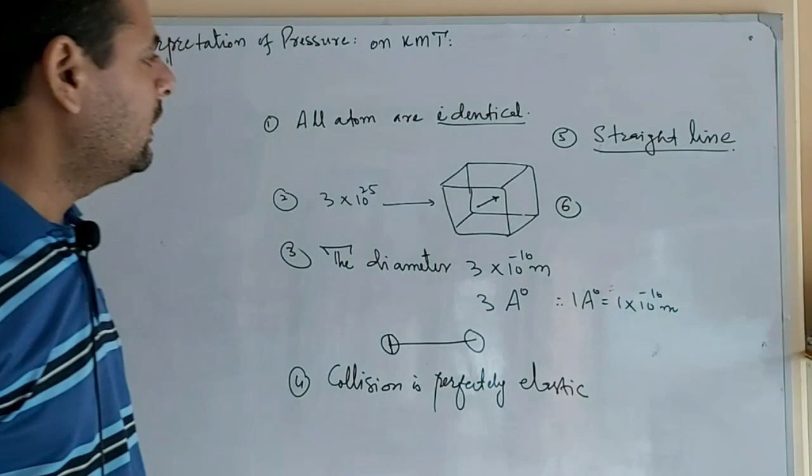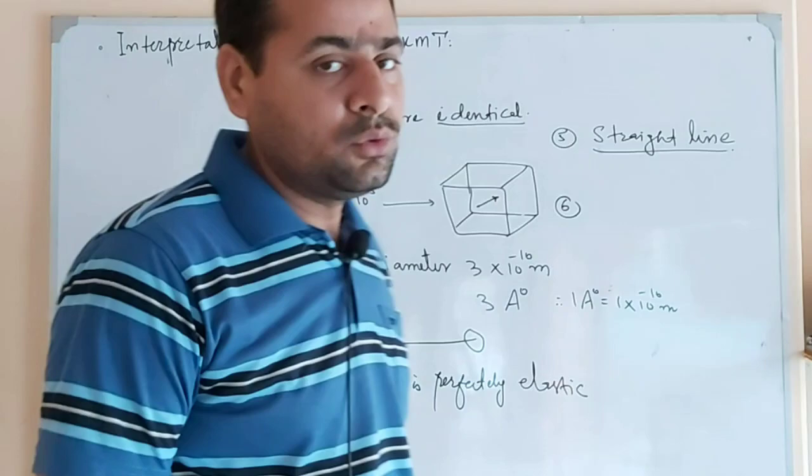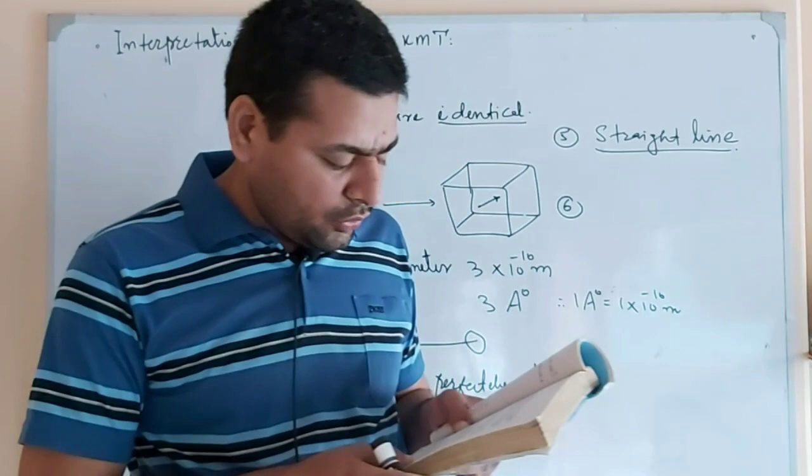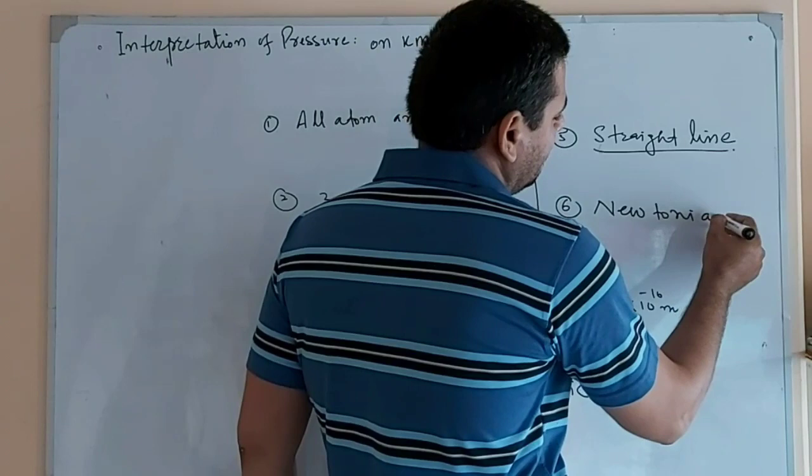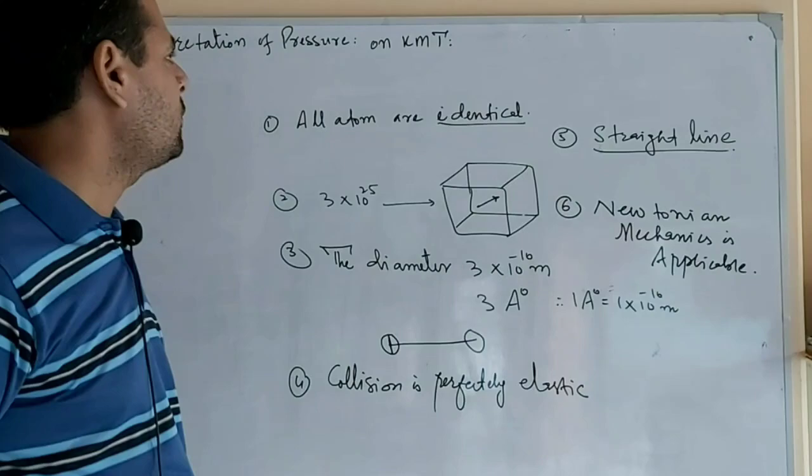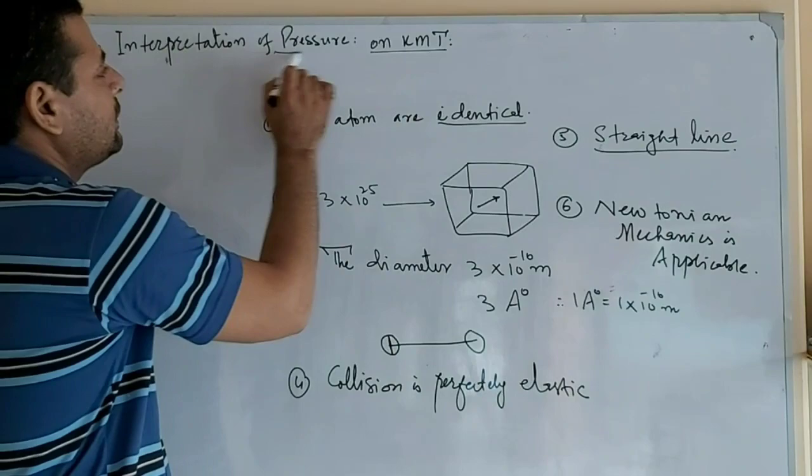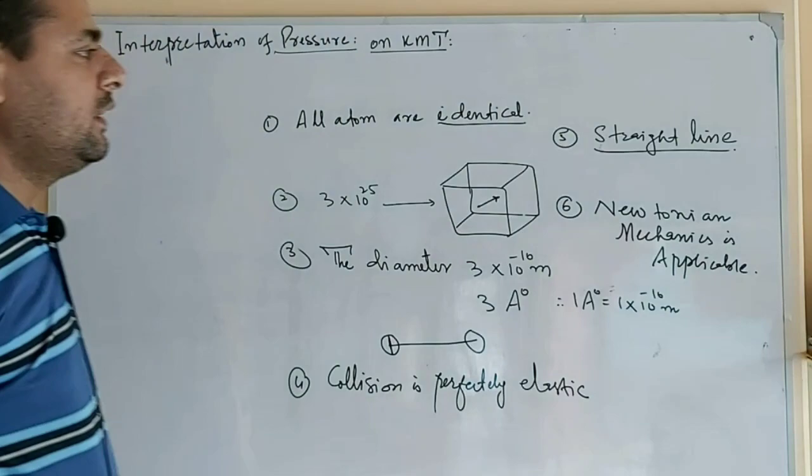So this is the fifth part - molecules move in a straight line. Newton's first law, second law, third law, pressure, and momentum formulas apply. So Newtonian mechanics is applicable to the motion of these molecules. Newtonian mechanics is applicable to the motion. These are the six postulates of KMT. From these postulates, the pressure equation is derived. If the pressure equation is derived, then you can apply it.